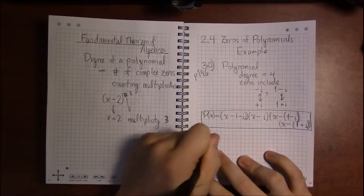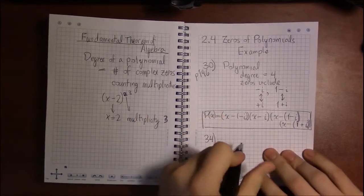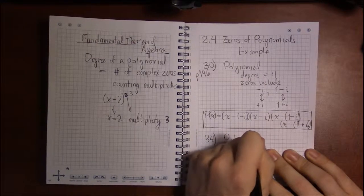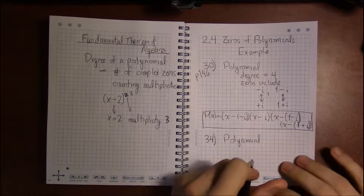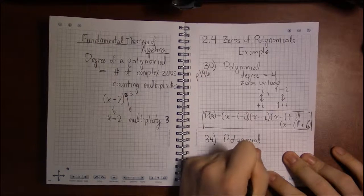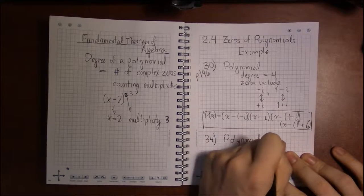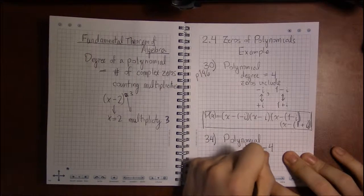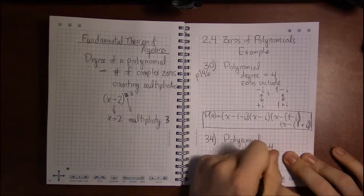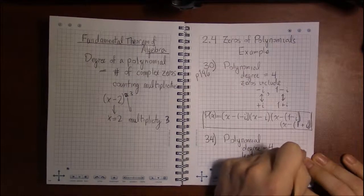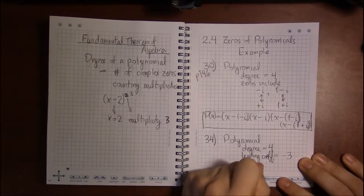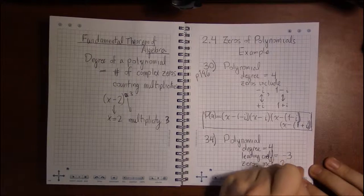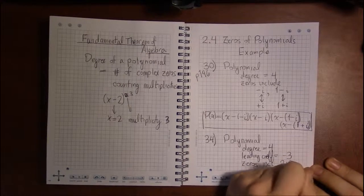We can step into a similar but slightly different set of problems. Same kind of scenario but an extra condition. This time we want problem 34: a polynomial whose degree is four and whose leading coefficient is minus three.